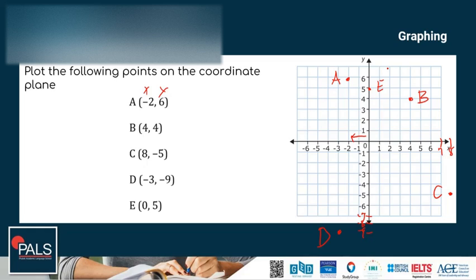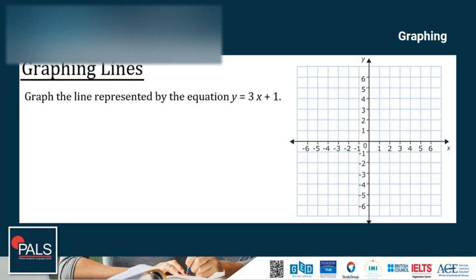That's how to plot points on the coordinate plane. Now let's proceed to graphing lines. In general, the graph of any equation represents the plot of all points that make the equation true. To graph linear equations, you only need to find two points on the line. Once you find them, you can connect them to make the full graph. You can pick any two values of X and see what the resulting values of Y would be.